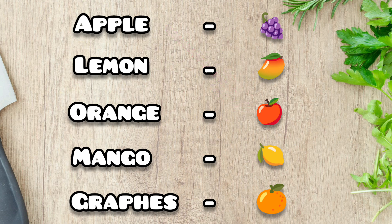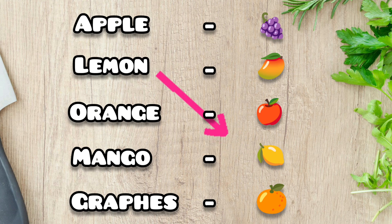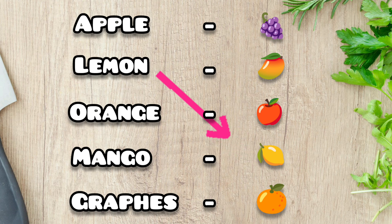The second question is for lemon. Lemon is a yellow color fruit. The correct answer is the fourth picture — the fourth picture is a lemon.